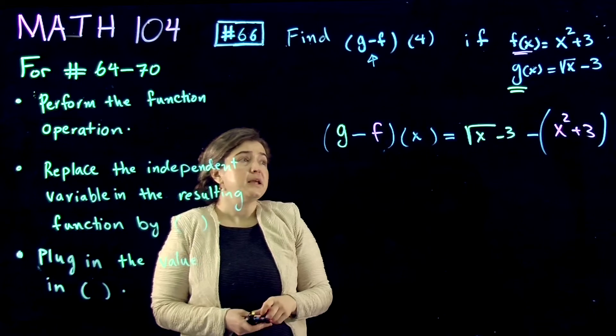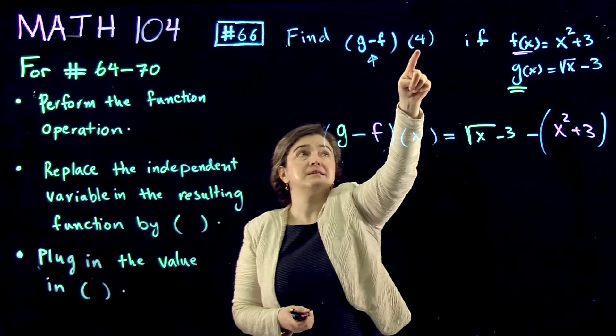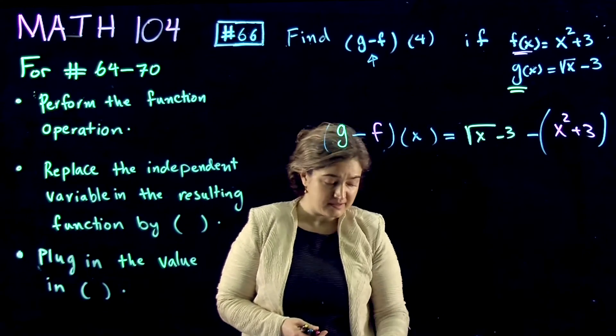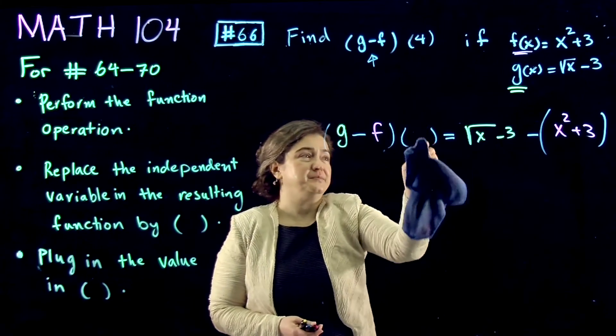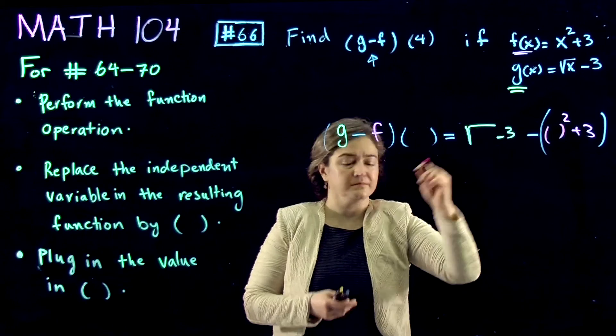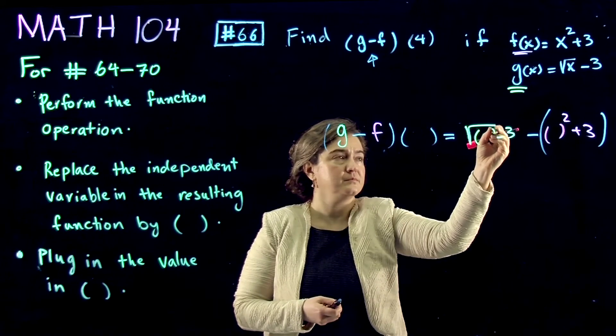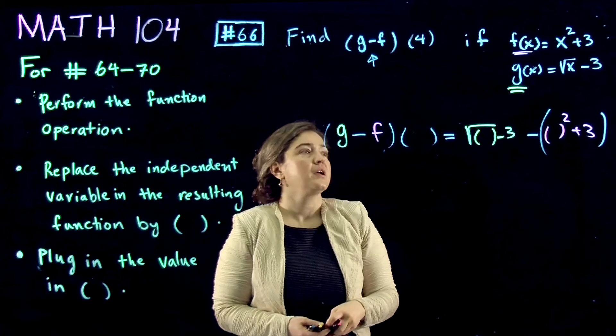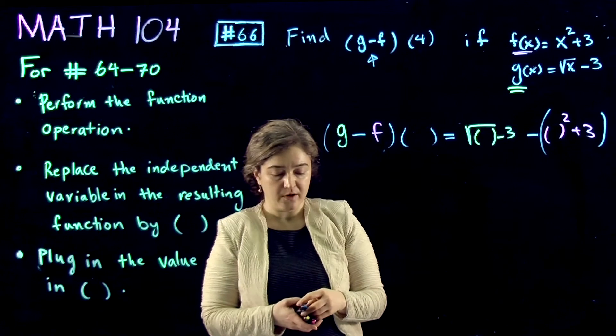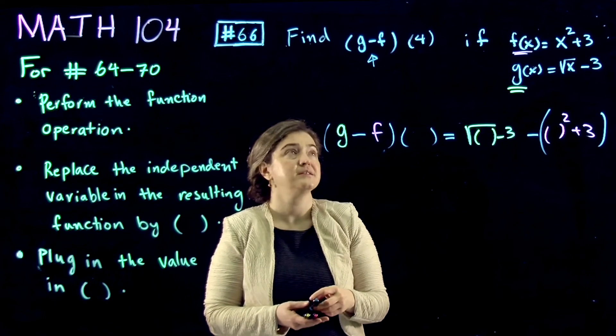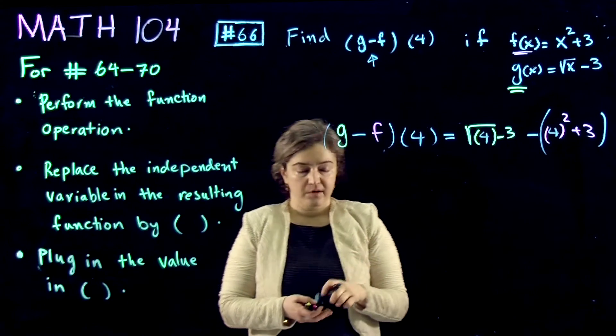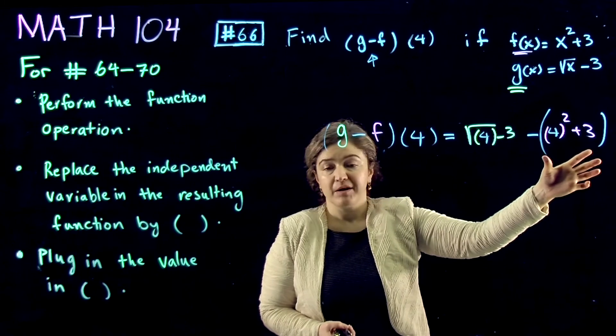And now, the next step is to replace the value you're evaluating at, and replace x by big parentheses first. Then, plug in the value you're evaluating at inside the parentheses, which gives you 4. So it's very important to have this big parentheses.